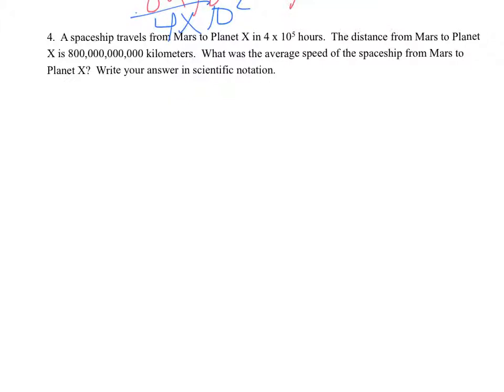For number 4, a spaceship travels from Mars to Planet X in 4 times 10 to the 5th hours. They're giving us time - that's our T, measured in hours. The distance from Mars to Planet X is 800 billion kilometers - that's our D.